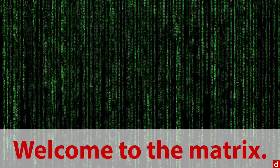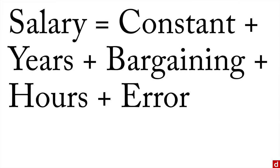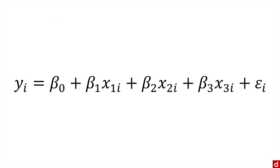Now let's go back to an example I gave in the last video about salary, or salaries equal to a constant plus years plus bargaining plus hours plus error. That's a way to write it out in words. And if you want to put it in symbolic form, it's going to look like this.